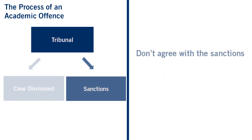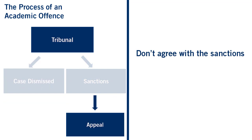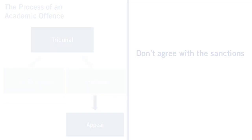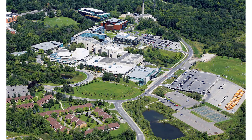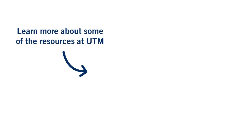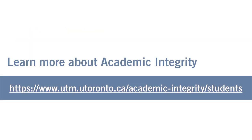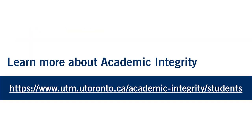If you don't agree with the sanctions that you receive, you can appeal. For more information on this process, visit this website. You can avoid the penalties of academic misconduct by ensuring that your learning is fair and honest. Sometimes it's challenging to remember our commitment to academic integrity, but there are a variety of resources at UTM to support you. Academic integrity is everyone's responsibility. To learn more about academic integrity, visit the UTM Academic Integrity website.